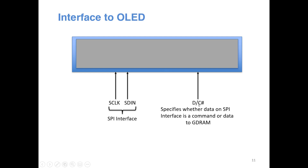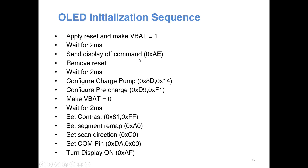If you are sending data to be stored in the GDDRAM, keep the DC# signal high to indicate it is data. If you are sending commands — such as enable display, disable display, choose a page, or choose a column — keep the signal low to indicate it is a command, not data for the display. From the datasheet you can find a particular initialization sequence that must be followed immediately after you power on the system.